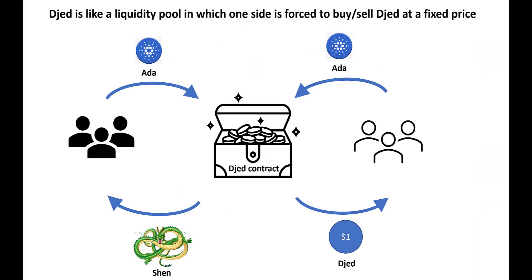To recap, Djed is like a liquidity pool where the left hand side — the reserve coin holders — is forced to buy and sell Djed at a fixed price, always guaranteeing stablecoin holders' tokens. I deliberately used the word 'forced' because it carries a potential negative connotation: a Shen holder carries real risk if the price of ADA falls. If the contract isn't designed well, you can also have reserve draining attacks like we saw with SIGUSD, because the contract forces them to swap their ADA for Djed whenever a stablecoin holder wants to redeem.